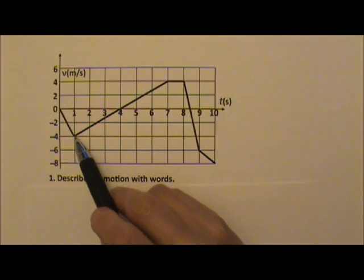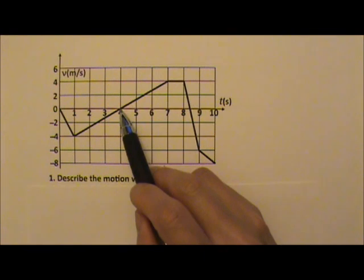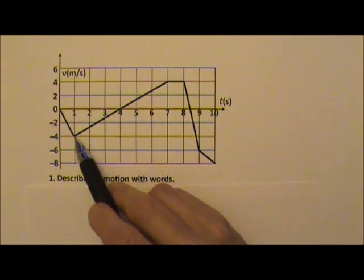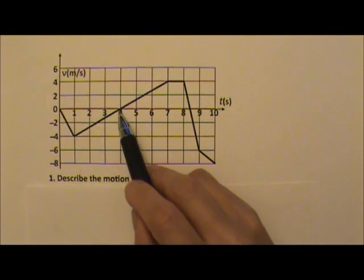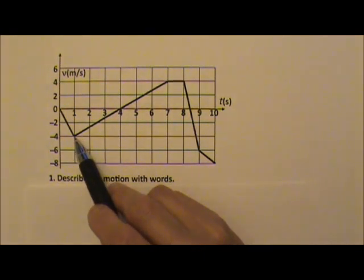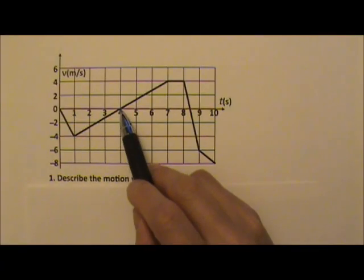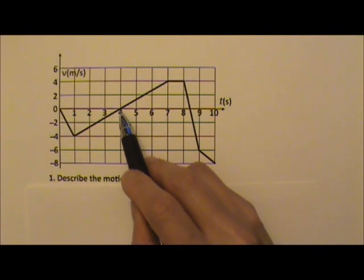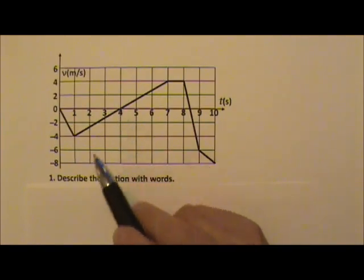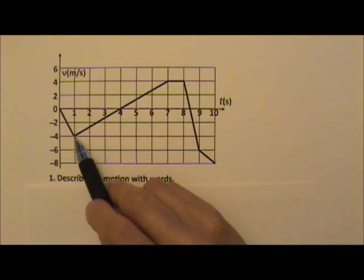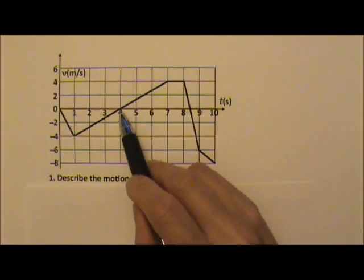And then for the next 3 seconds, between t equals 1 and 4, the object slows down. It goes from negative 4 meters per second to 0 meters per second, coming to rest momentarily at 4 seconds. So it slows down, still traveling in the negative direction for those 3 seconds.